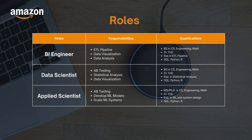The next role is applied scientist — essentially Amazon's machine learning engineering role. As an applied scientist, you need to understand A/B testing, develop ML models, and build scalable systems to support hundreds of millions of users. The qualifications are higher: MS or PhD in computer science, engineering, or math, four years of experience, experience in ML and system design, and knowledge of SQL, Python, and R.